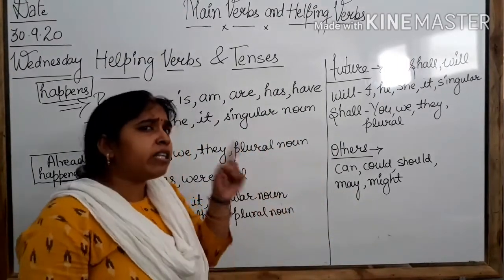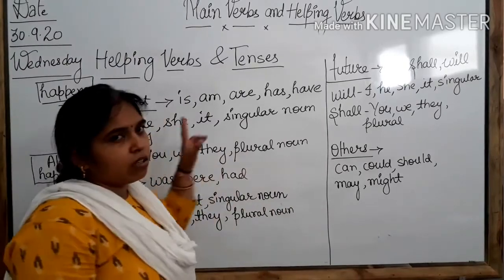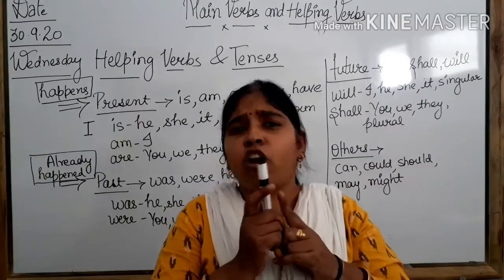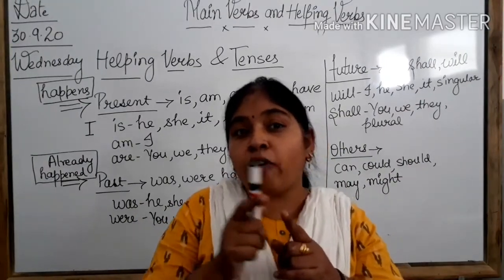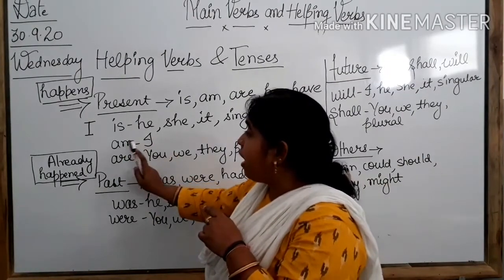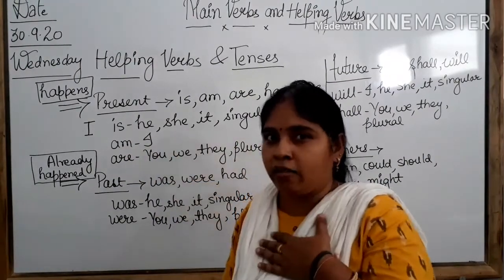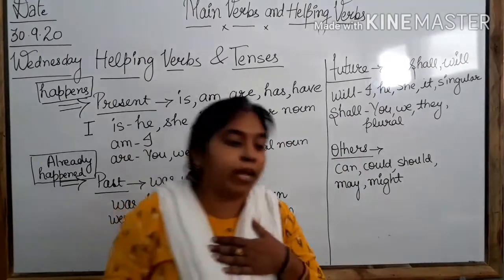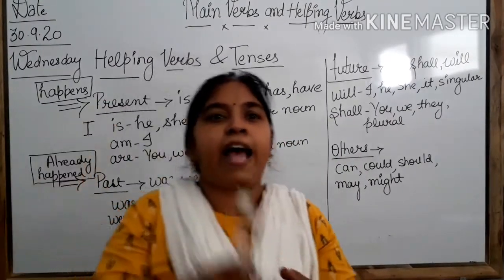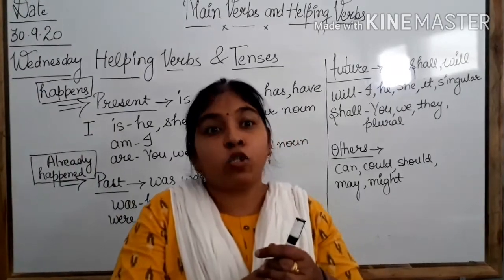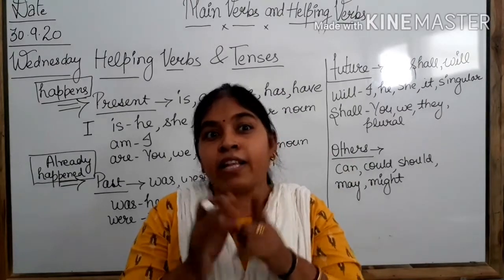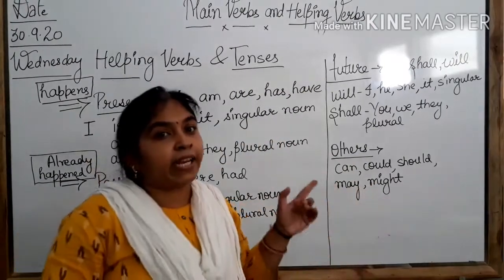Now we move to the second group. That group is alone — no friend is there. That means 'I.' I is always alone; there is no one in that group. So we use 'am' with I. 'I am a girl.' 'I am a woman.' 'I am a boxer.' 'I am a sport person.' So we use 'am' with only I. That is a single one — there is no friend in the second group.